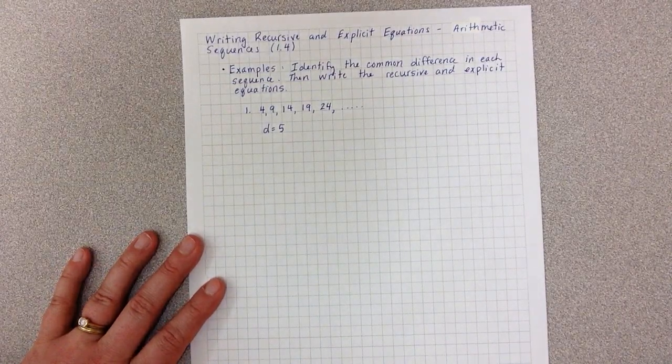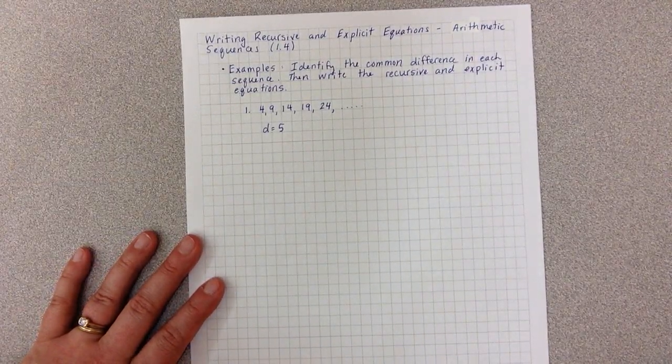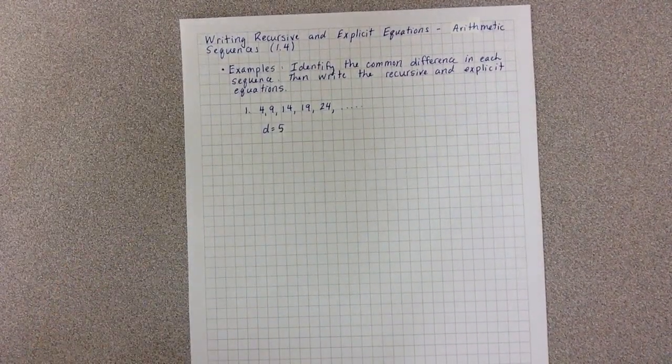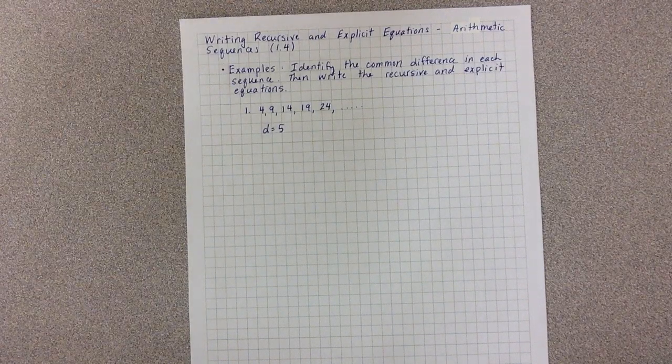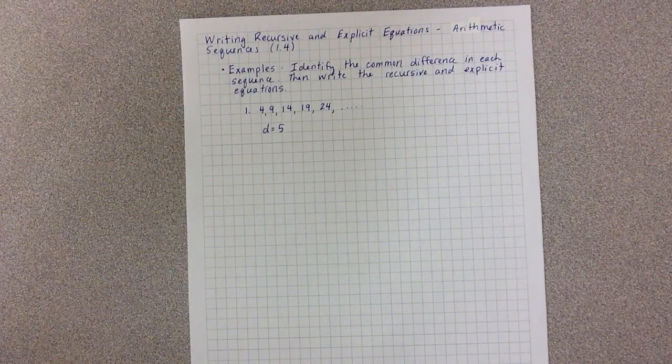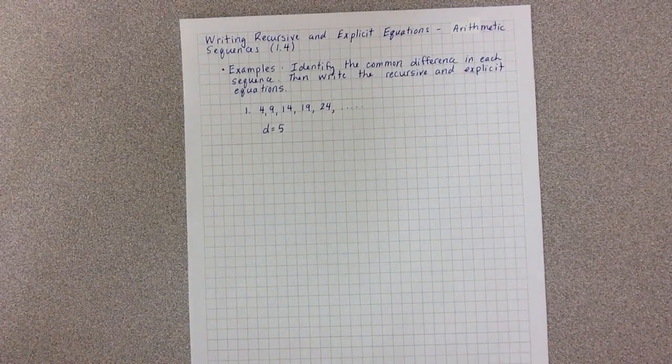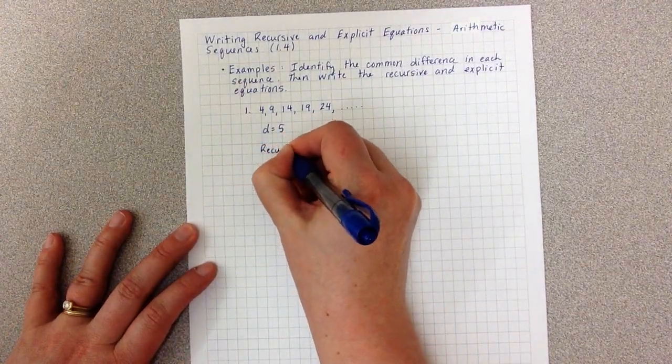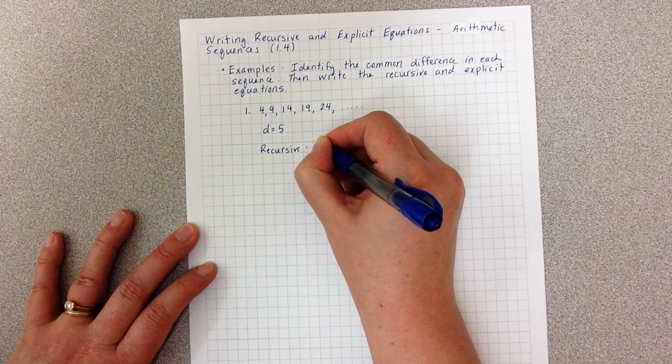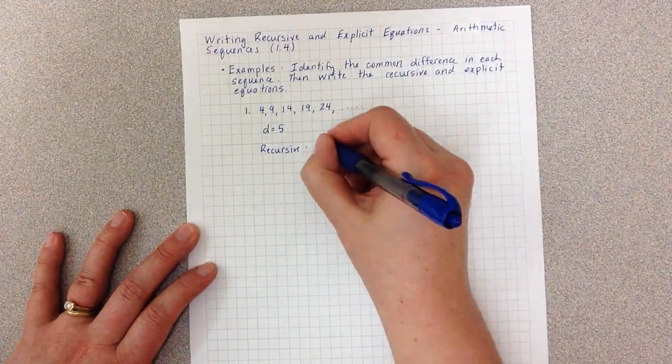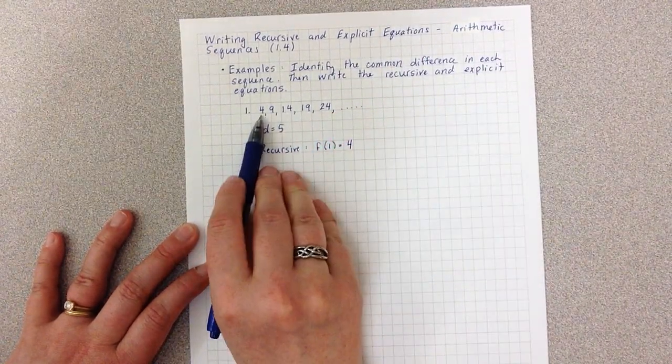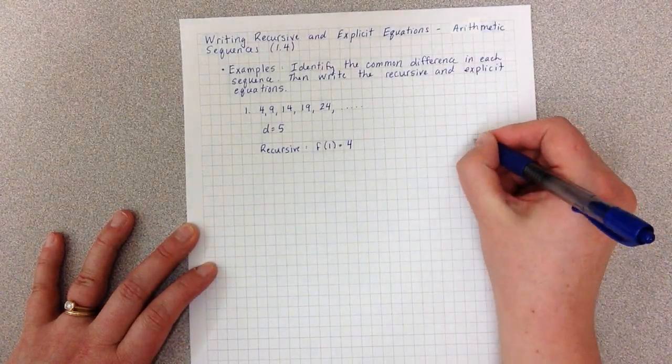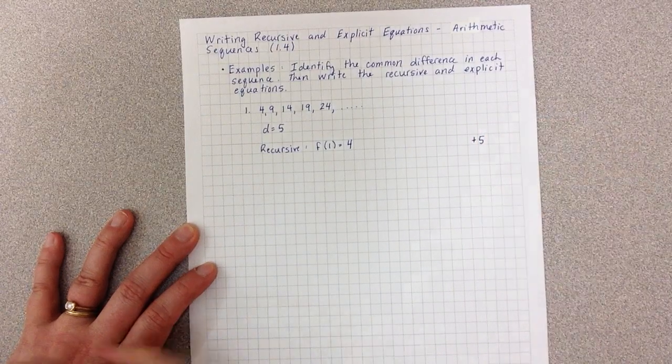Now we're going to need to write the recursive and explicit equations. The recursive is the one that you're the least familiar with from past math courses, but it's actually the way you think about these sequences. You think about where they begin at four and how they grow. They grow by adding five each time.